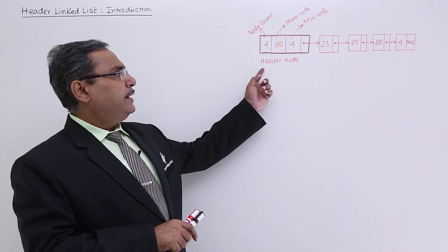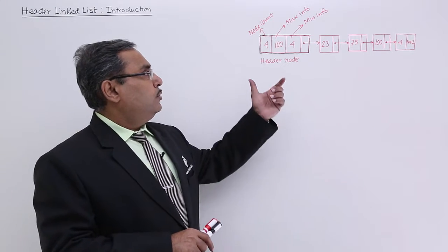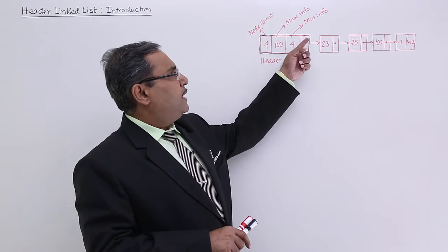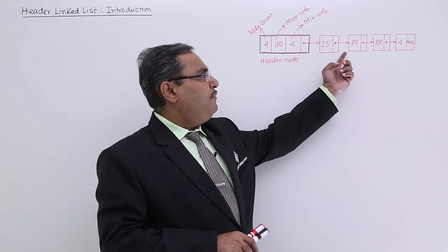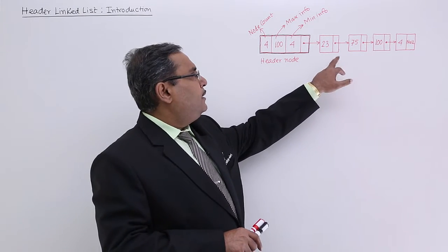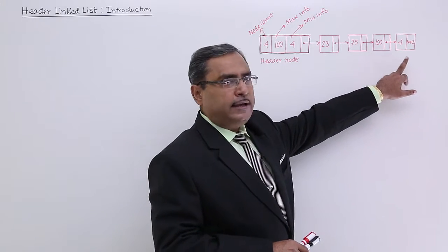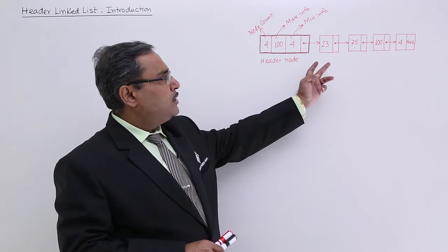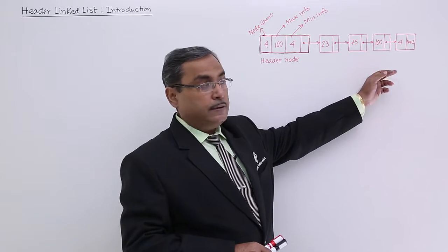This is the header node, and this is known as a header linked list. For demarcation, I've put another color for this header node. For each ordinary node, we have info and link fields - two fields total. One is the info field and another is the next field.